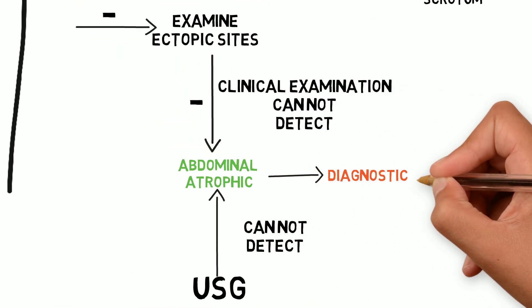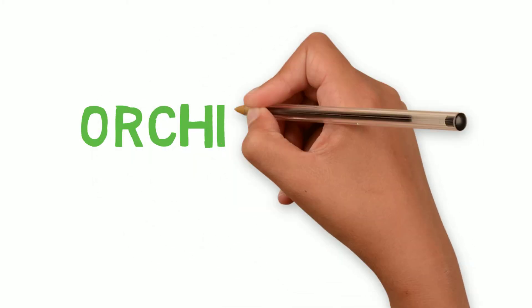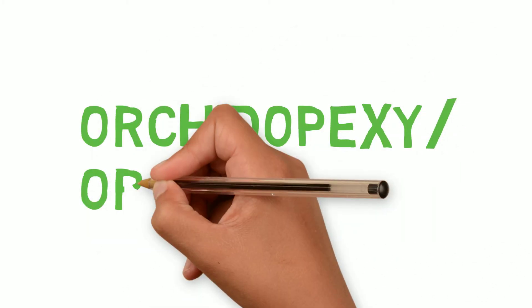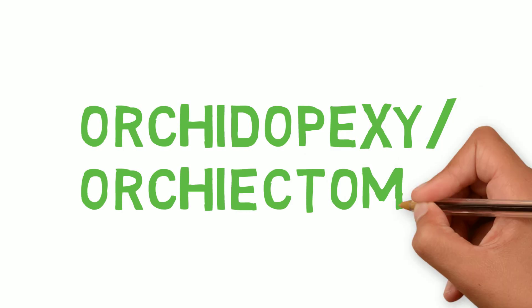Then how to diagnose abdominal or atrophic testis? This is by diagnostic laparoscopy, and then depending on the findings, orchidopexy or orchiectomy, that is removal of testis.